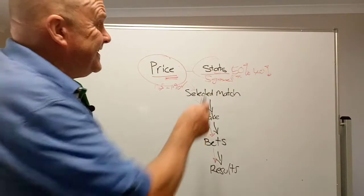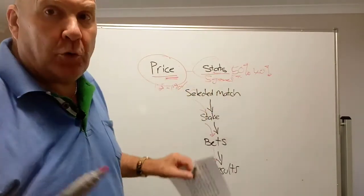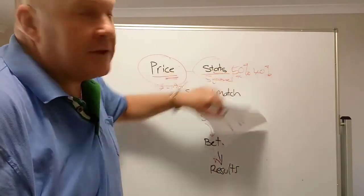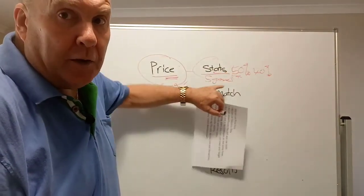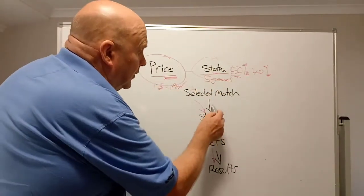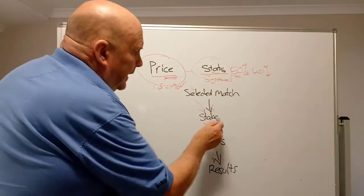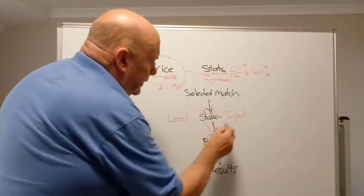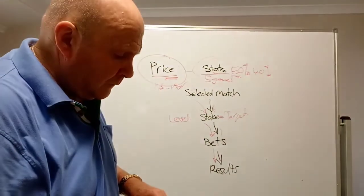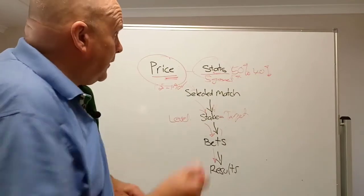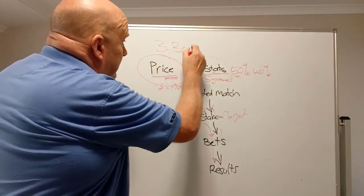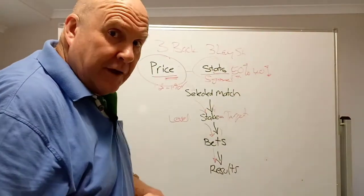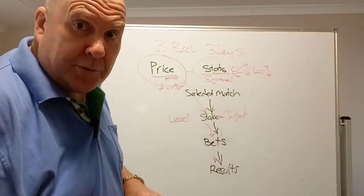We can also use the stats only, without the price. So with the price, you'd have a very broad range — we want to bet every home team that has got a 50% winning rate, and work it just on the stats only. Then it works right through the method and comes to the result. We have two staking methods: level staking and target staking. We also run three back strategies and three lay strategies, meaning we can run simultaneously six different strategies all at one time with SoccerStatsBot.